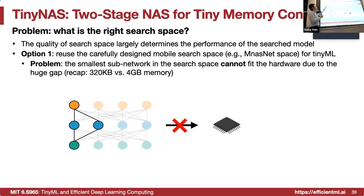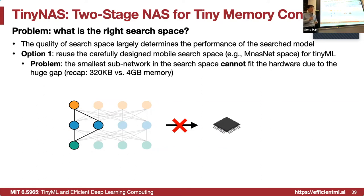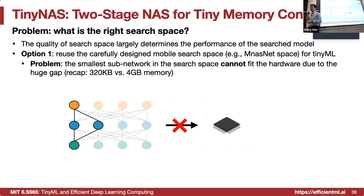There are several options for finding a good design space. Option one is to reuse prior design spaces carefully designed by other teams — for example, the MobileNet search space or EfficientNet search space. However, those search spaces were designed for mobile devices with much larger computational capability than microcontrollers. This option is not viable because even the smallest subnetwork in these search spaces cannot fit the hardware resources. A microcontroller has 300 kilobytes versus a mobile phone's 4 gigabytes of memory, so it's hard to reuse the mobile search space.